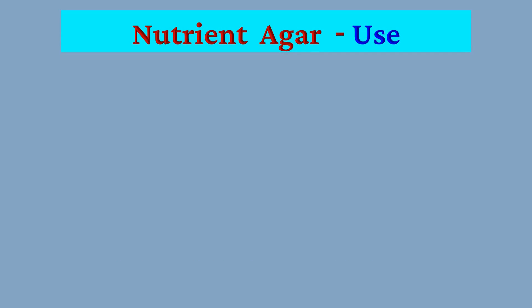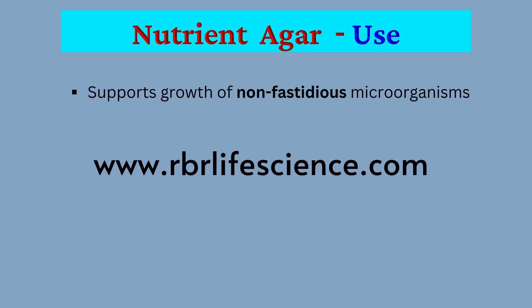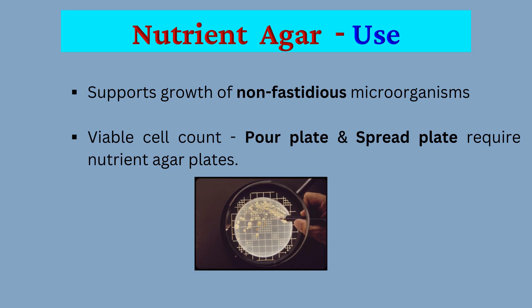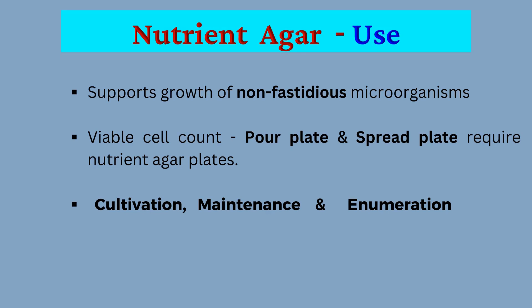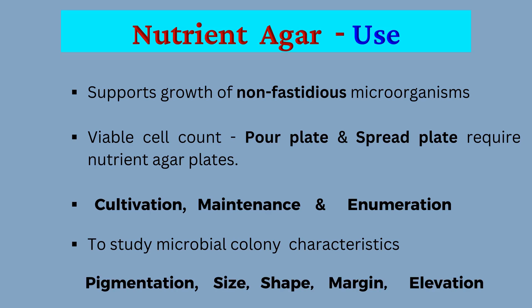Now let's see what are the uses of nutrient agar. Nutrient agar supports the growth of a wide variety of non-fastidious microorganisms. Nutrient agar is used for viable cell count methods such as pour plate method and spread plate method, which require nutrient agar plates. Nutrient agar media is also used for the cultivation, maintenance and enumeration of microbes. To study microbial colony characteristics such as pigmentation, size, shape, margin and elevation, nutrient agar plates are used.